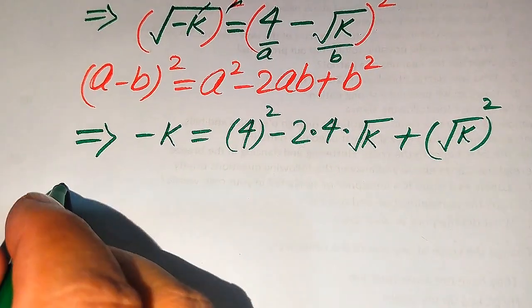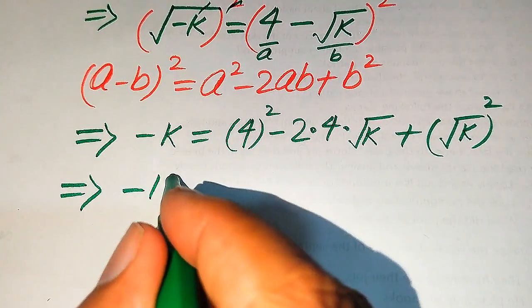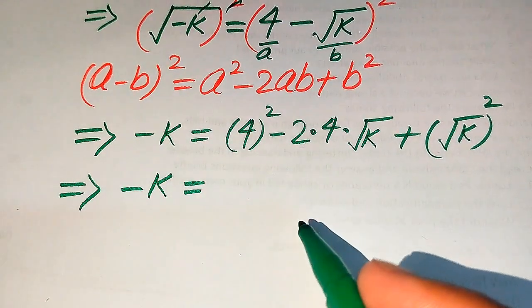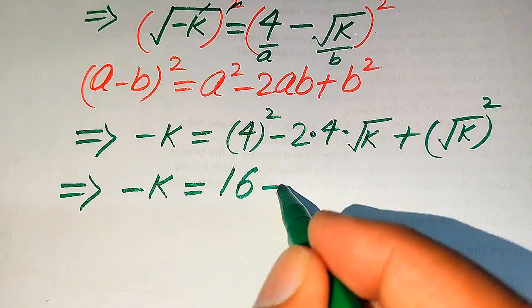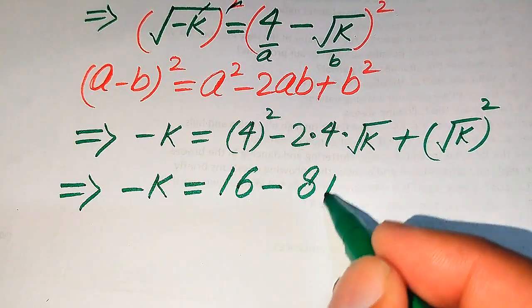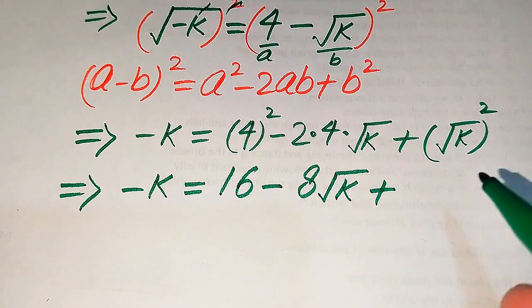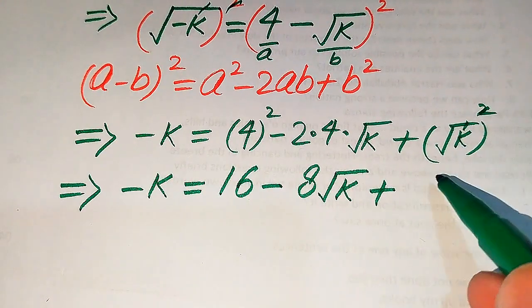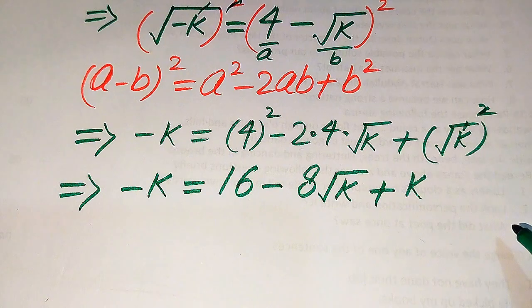Further simplifying: minus k equals 16 minus 8 times square root of k, plus k, since square root of k squared gives k only.